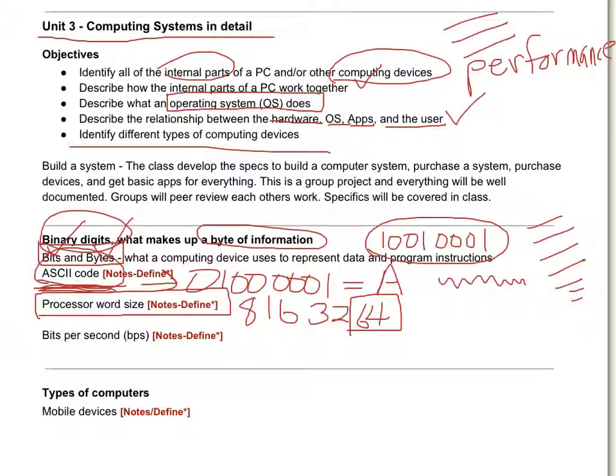One of the reasoning behind understanding this would be, when you download software to your computer, there may be options. A 32-bit software, or a 64-bit, depending on what processor you have.